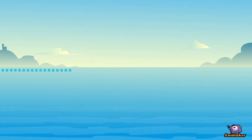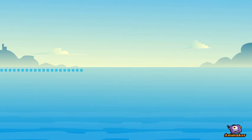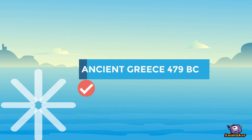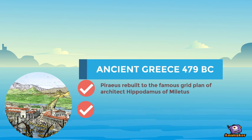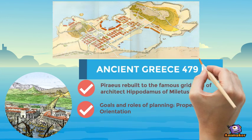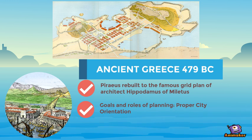The city port of Piraeus, ancient Greece, was rebuilt by Hippodamus. Proper city orientation was one of the goals of rebuilding.